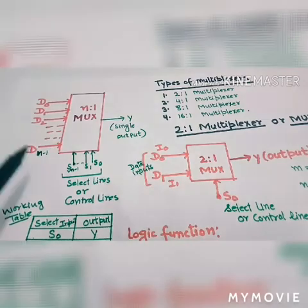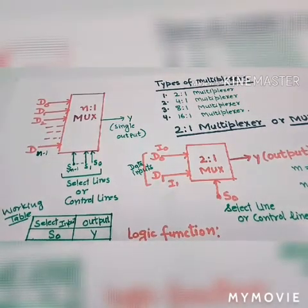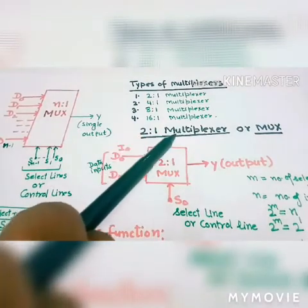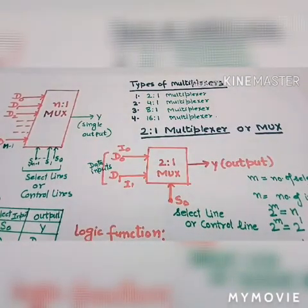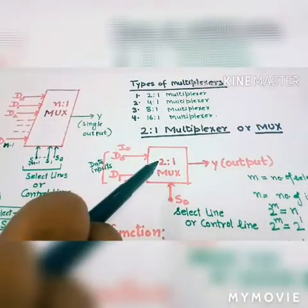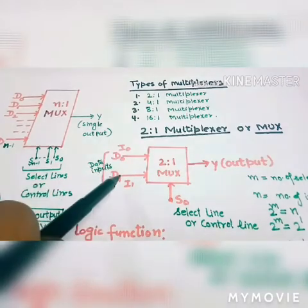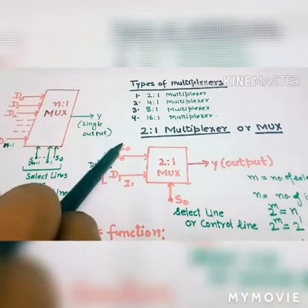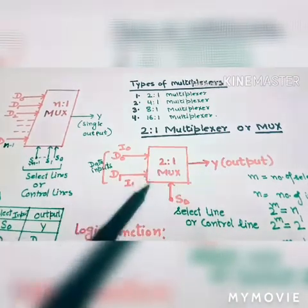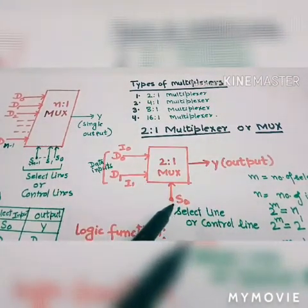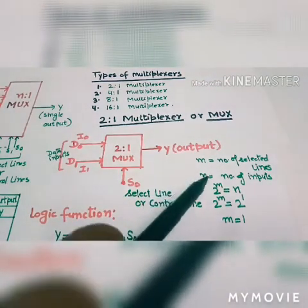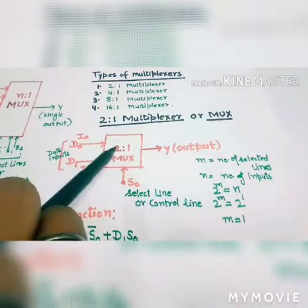The number of select lines is also called control lines. Now let's take the first type of multiplexer: the 2-to-1 multiplexer. For an N-to-1 multiplexer, if it is 2-to-1 then N equals 2. M is the number of select lines, N is the number of inputs, and 2^M equals N.